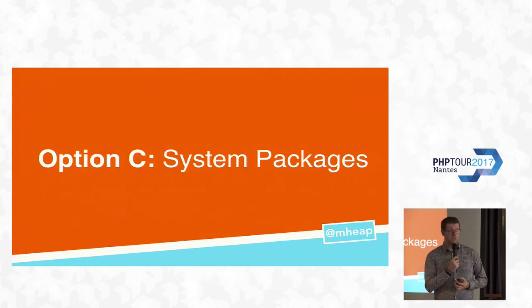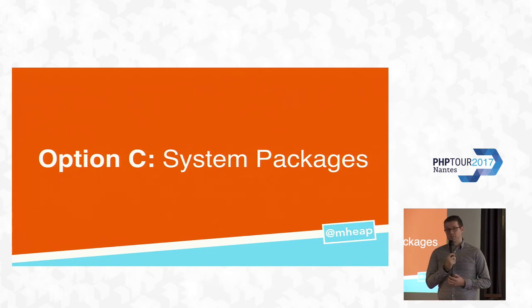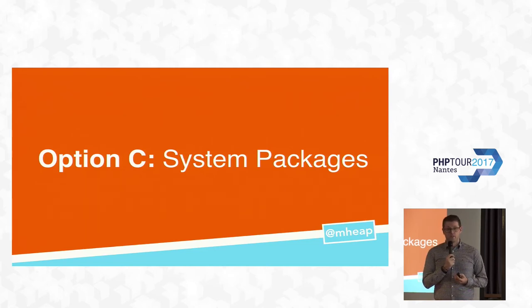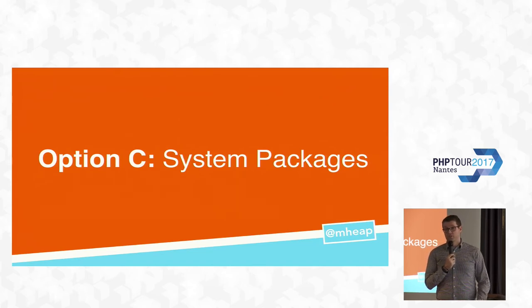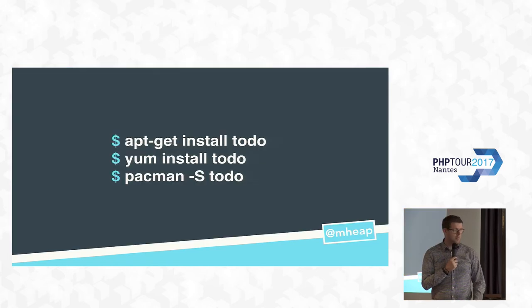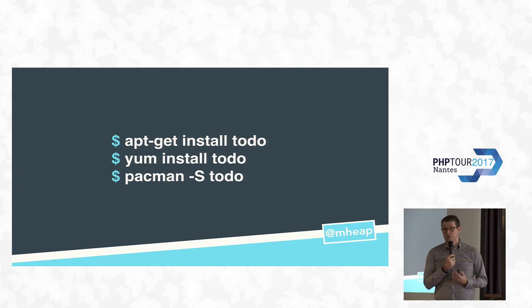Which brings us to option C: using system packages. This is where things start to get really complicated. This is where you build a package for your target distribution — whether CentOS and you need an RPM, or Ubuntu and you need a .deb file. You actually build a system package for your application, which means building on the shoulders of giants — using the built-in package manager written by people who spend their life writing package managers. It also assumes you have complete control of the machine you're deploying to, which might rule it out for some.